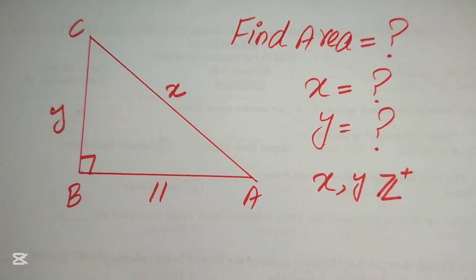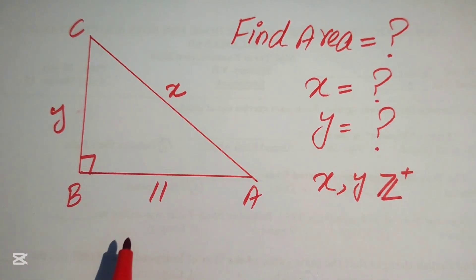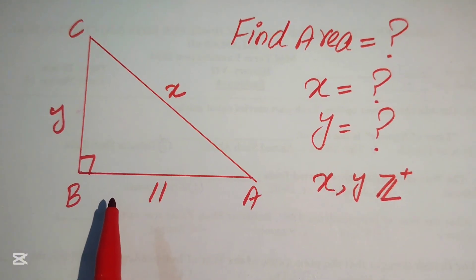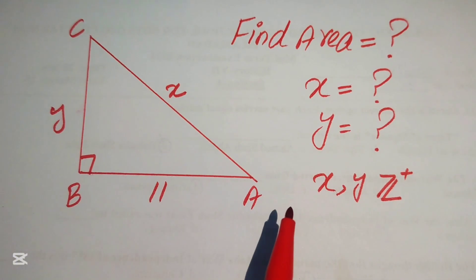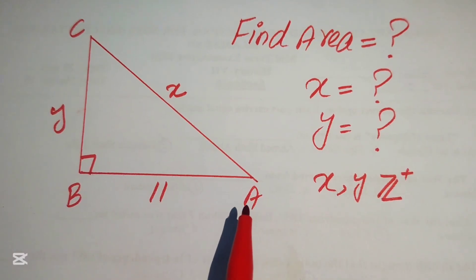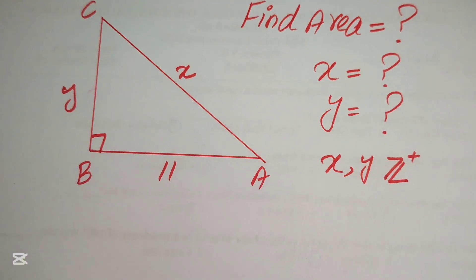Remember that x and y should be positive integers, because this is a triangle and x and y are the lengths of its sides, so they cannot be negative. We solve this problem for positive integer values.